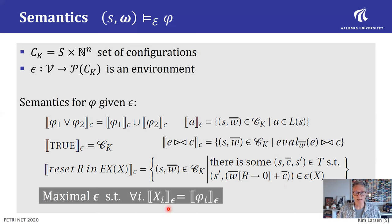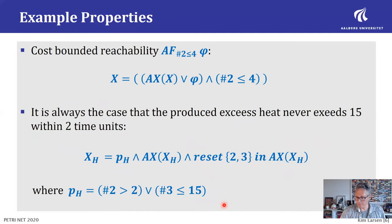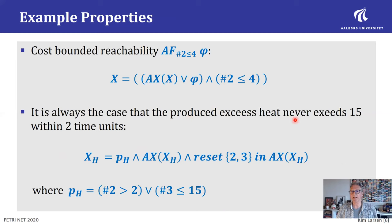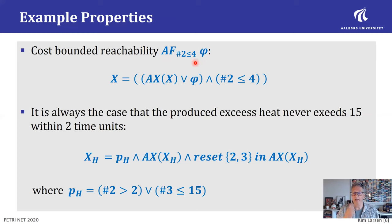For the recursive variables, their semantics is simply the maximum set of configurations that makes the defining equation true. This gives us some interesting expressible properties. For example, one recursive formula can express that the produced heat never exceeds 15 within two time units. Another recursive formula expresses that for all paths, eventually phi will hold, guaranteed to hold within a bound of four in terms of the second weight coordinate. It is a very expressive logic.